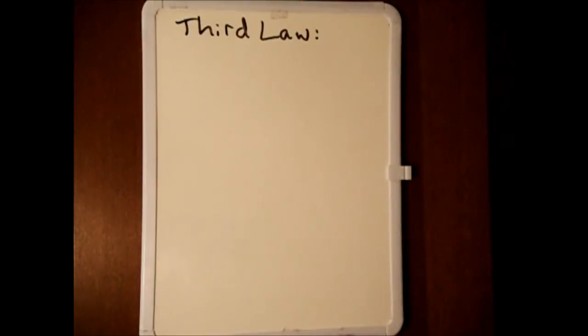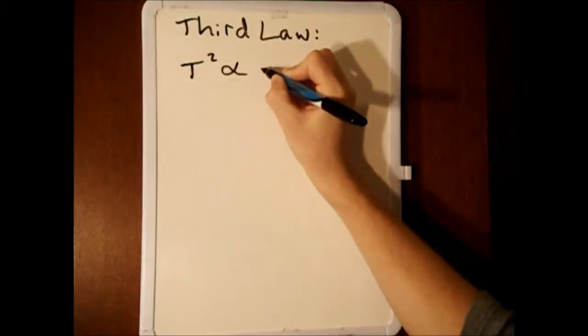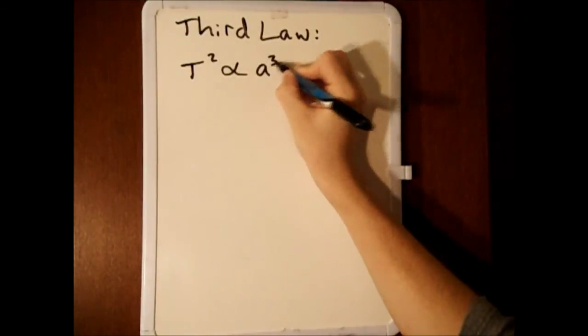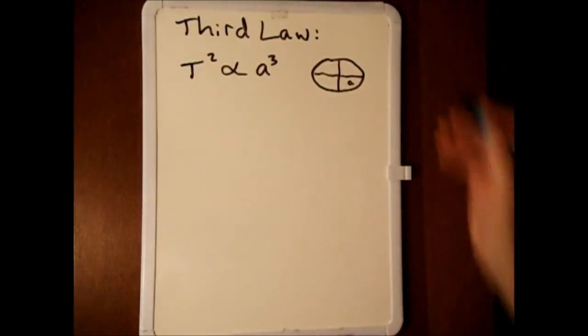Let us now prove Kepler's third law. The third law states that the square of the orbital period is proportional to the cube of the length of the semi-major axis, shown here.